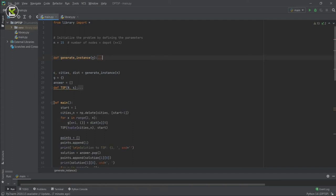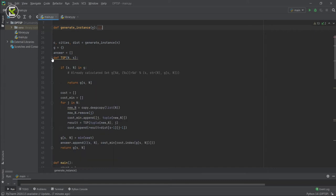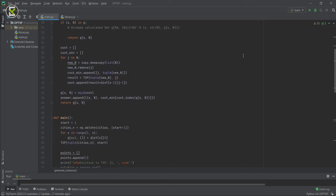In the main function, we have our starting point and we delete that from our cities list. Then we call the TSP function. In the TSP function, we apply the dynamic programming approach that we talked about and we get the optimal solution. And finally, we plot the results.